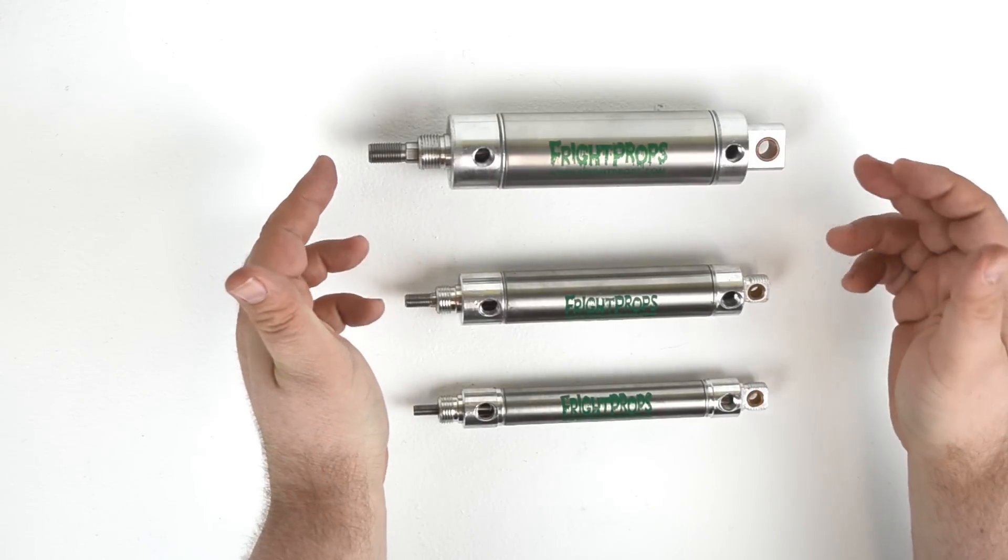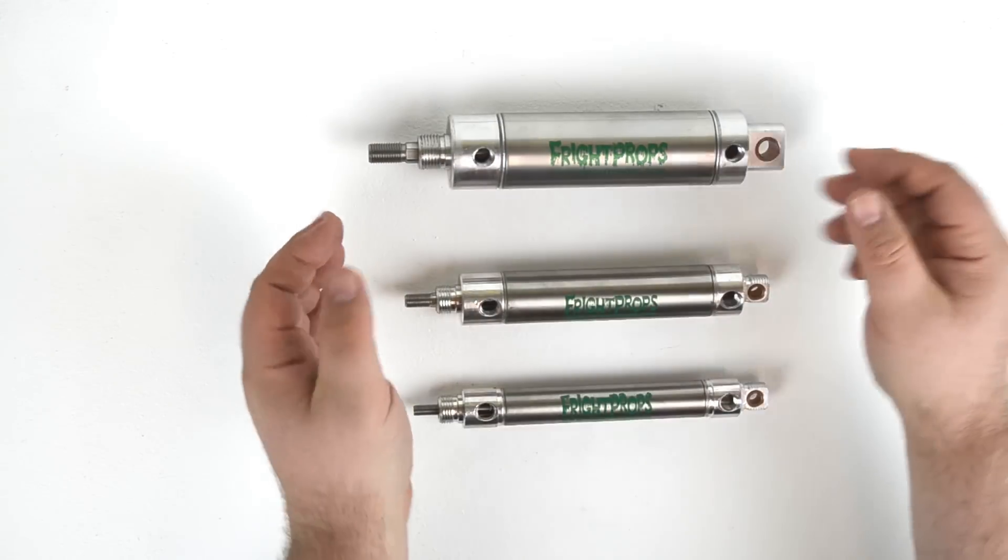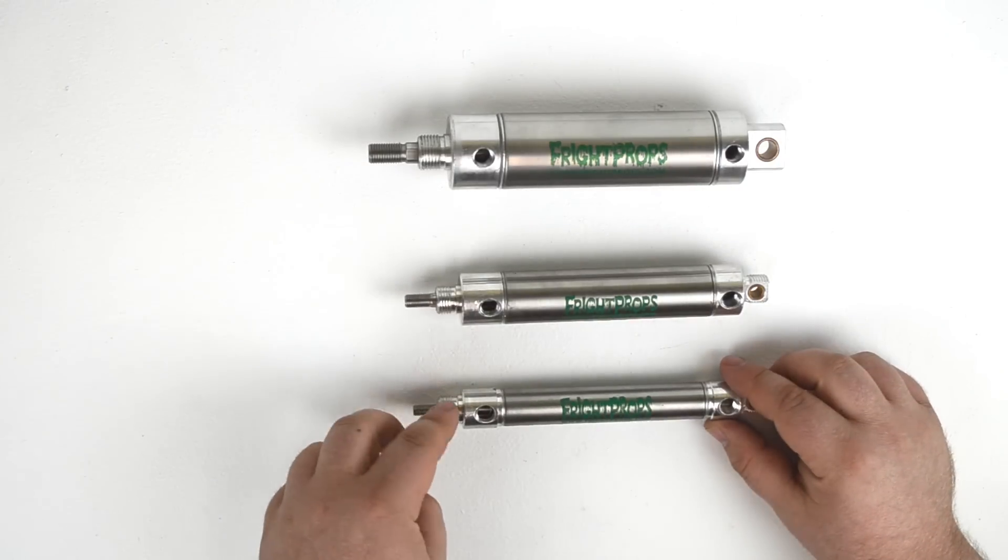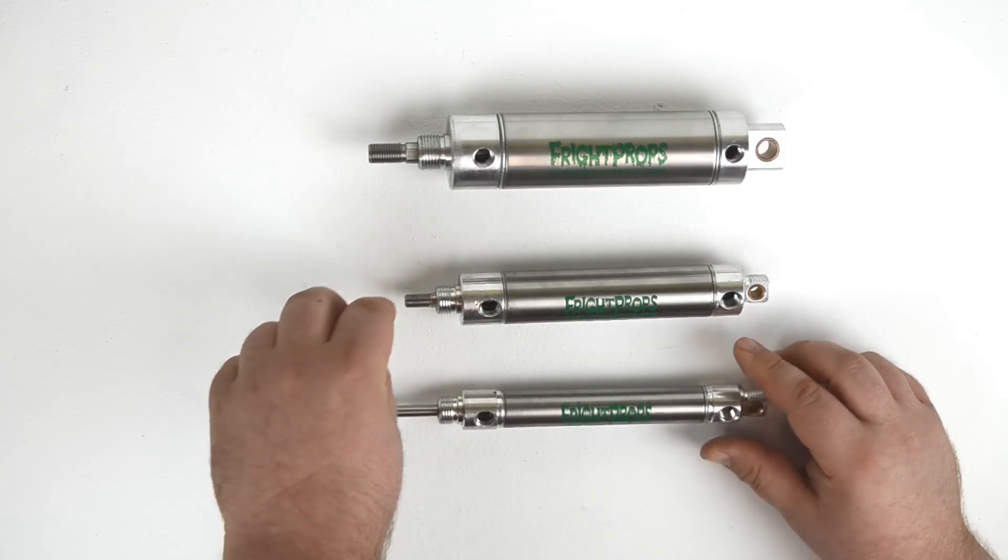The larger the bore, the more pressure the cylinder can exert. Also, the larger bore a cylinder has, the thicker the rod of the cylinder will be.